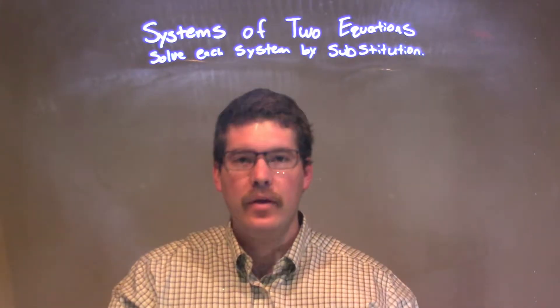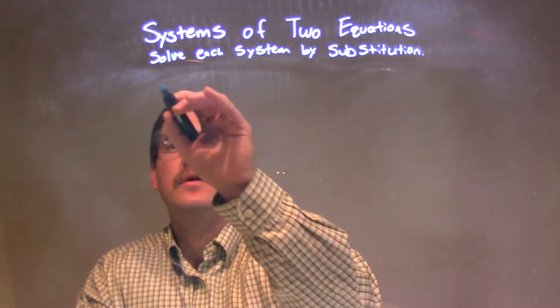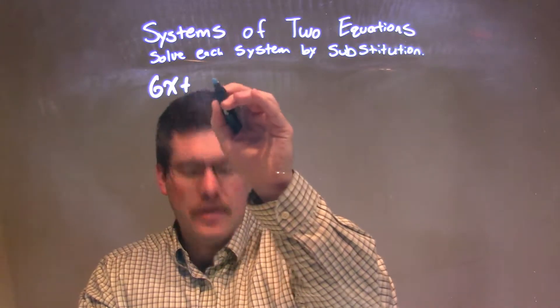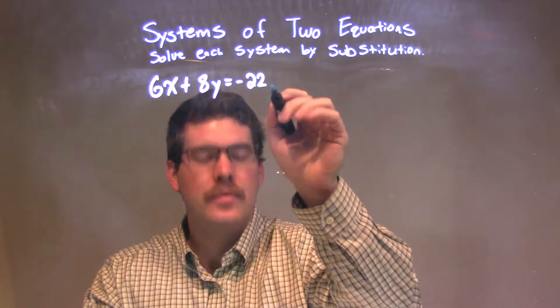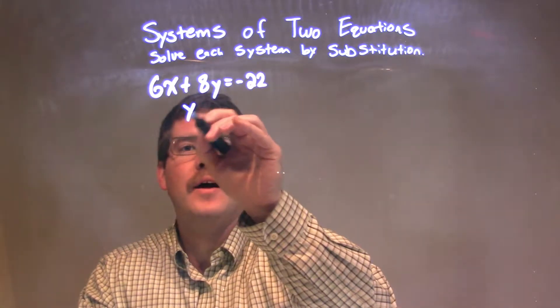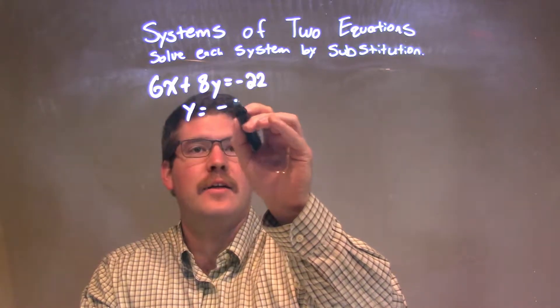If I was given this system of equations: 6x plus 8y equals negative 22, and y equals negative 5.